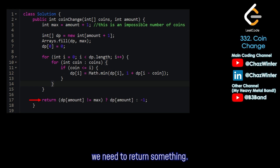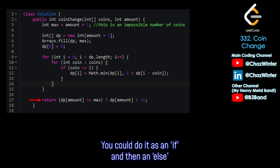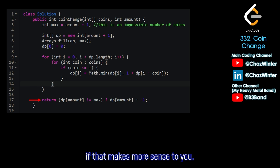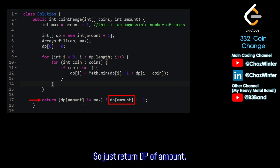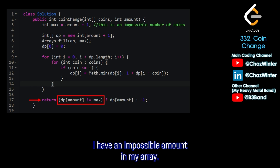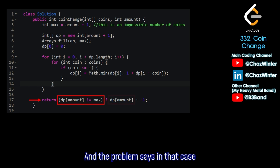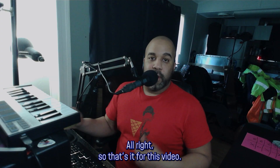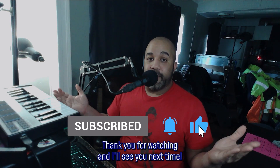When we're done, we return dp[amount] — the last value in the array — as our final answer. But we must check it's not that impossible value, so I use a ternary: if dp[amount] is not equal to max, return dp[amount]; otherwise, return negative one, because it's impossible to make that amount with the given coins. That's it for this video — please subscribe, put questions in the comments below, and I'll see you next time.